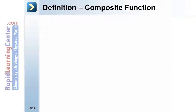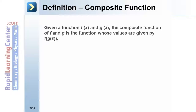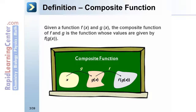Let's start with the definition of a composite function. If you are given a function f of x and g of x, the composite function of f and g is the function whose values are given by f of g of x. You start with x and put it into the function named g. g of x comes out and then goes into the function named f, and what comes out is f of g of x.